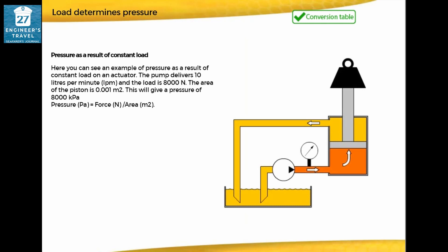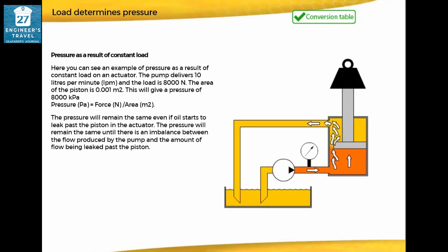Pressure as a result of constant load: the pump delivers 10 liters per minute and the load is 8,000 newtons. The area of the piston is 0.001 square meters, giving a pressure of 8,000 kilopascals. Pressure equals force divided by area. The pressure will remain the same even if oil starts to leak past the piston, until there is an imbalance between the flow produced by the pump and the amount of flow being leaked past the piston.